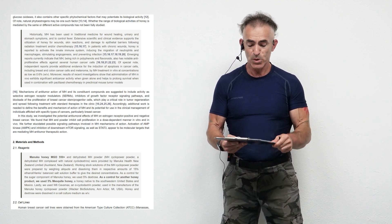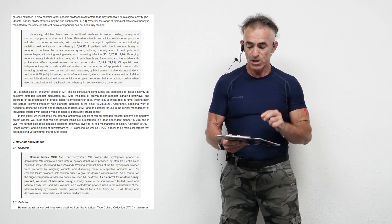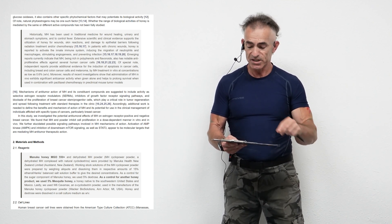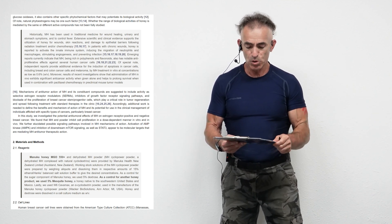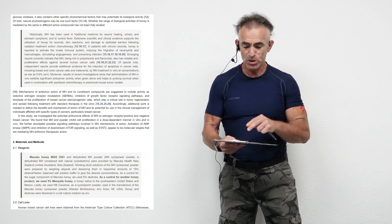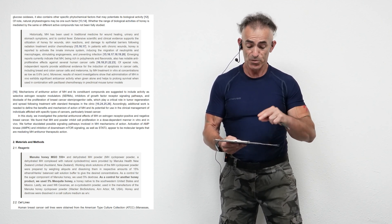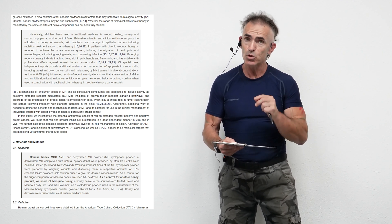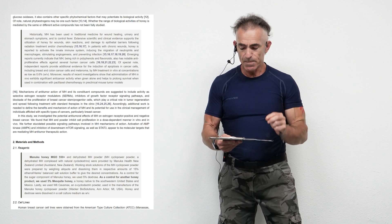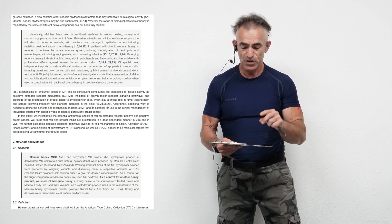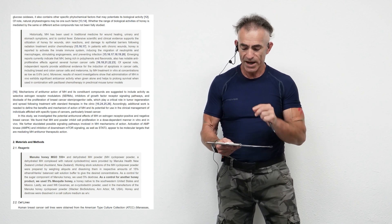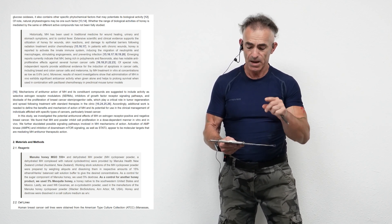In patients with chronic wounds, honey is reported to activate the innate immune system, inducing the migration of neutrophils and macrophages, stimulating angiogenesis, and preventing infection. Emerging reports currently indicate that Manuka honey, being rich in polyphenols and flavonoids, also has a notable anti-proliferative effect against several human cancer cells. A special note, independent reports provide additional evidence for the induction of apoptosis in cancer cells, including breast and colon cancer cells and melanoma.